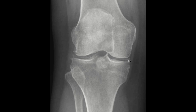We can see here in the area of the medial meniscus as well as the lateral meniscus that there is a faint density. It's not as dense as bone, but much denser than the surrounding soft tissues, suggestive of mineralization.